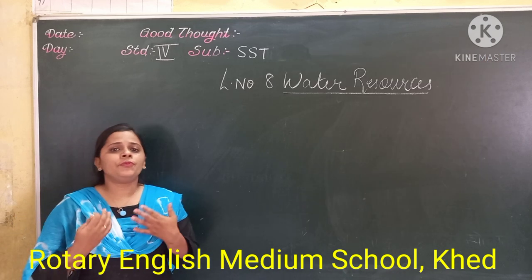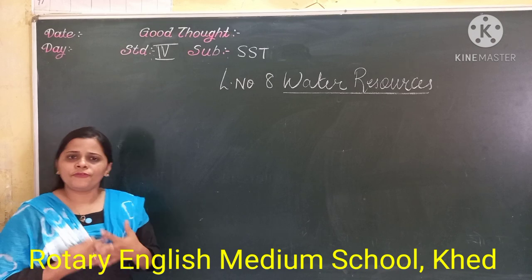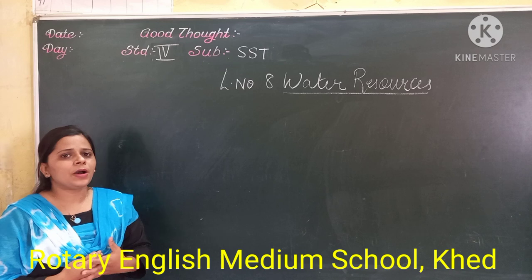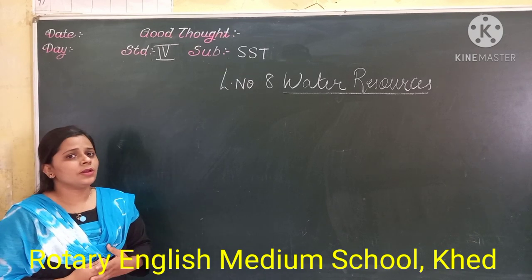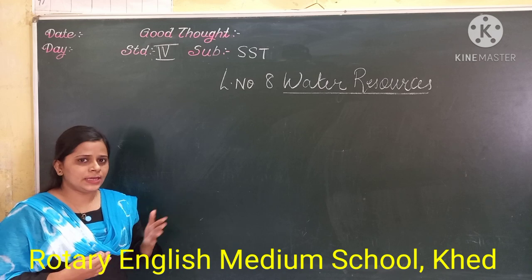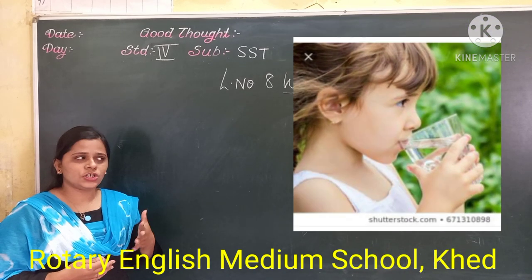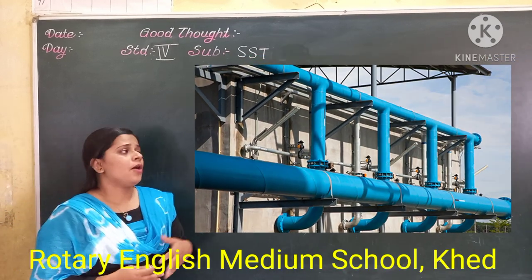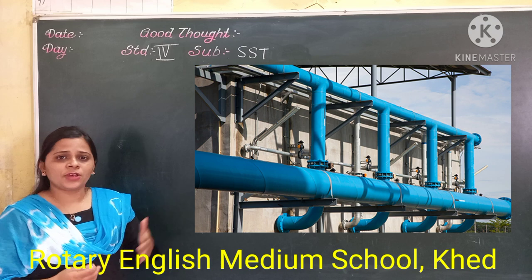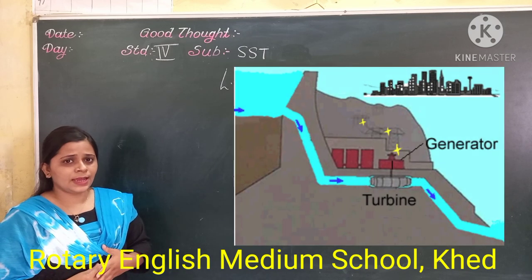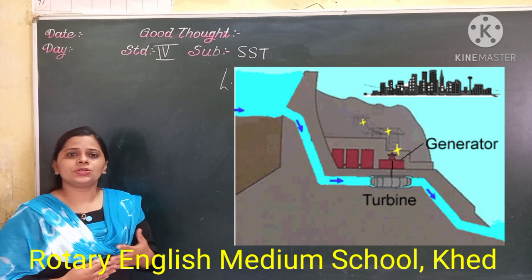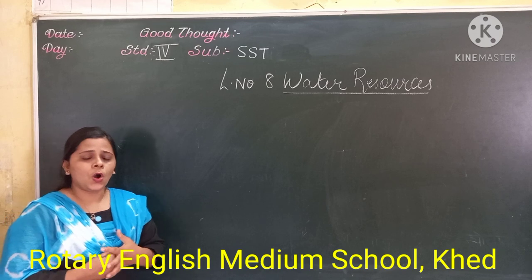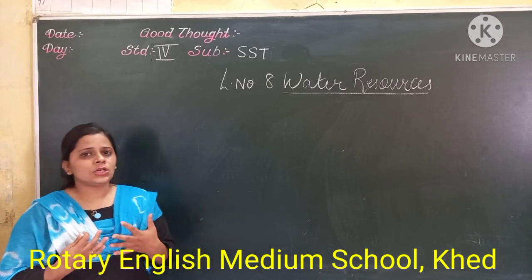So students, we use water for different purposes. Can you tell me which different purposes we use water? We use water for drinking, washing clothes, washing utensils, industrial purposes, etc. And also, water is used to produce electricity. So for all these purposes, water is useful.